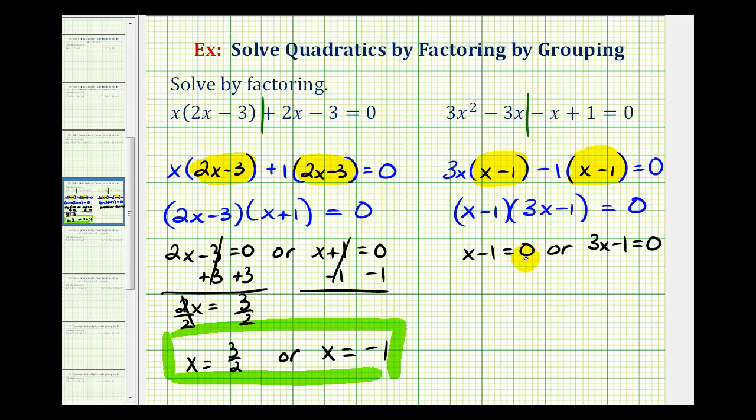So here we would add 1 to both sides, giving us a solution of x equals 1. Here we would start by adding 1 to both sides. That would give us 3x equals 1 and then divide by 3. So our second solution is x equals 1 third.